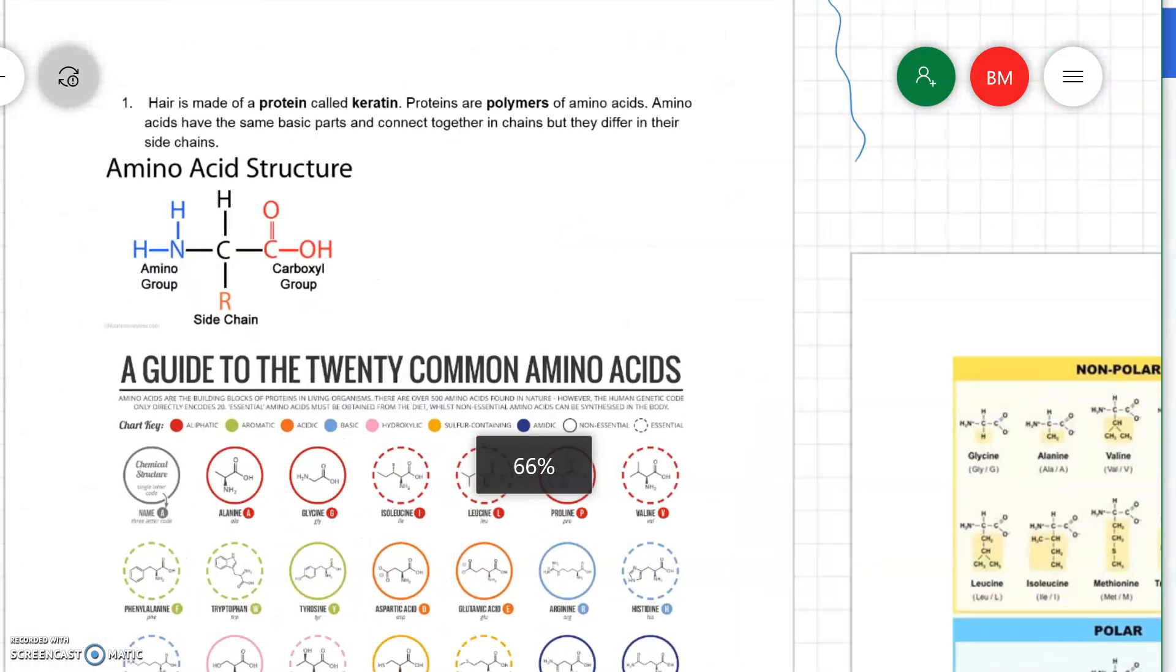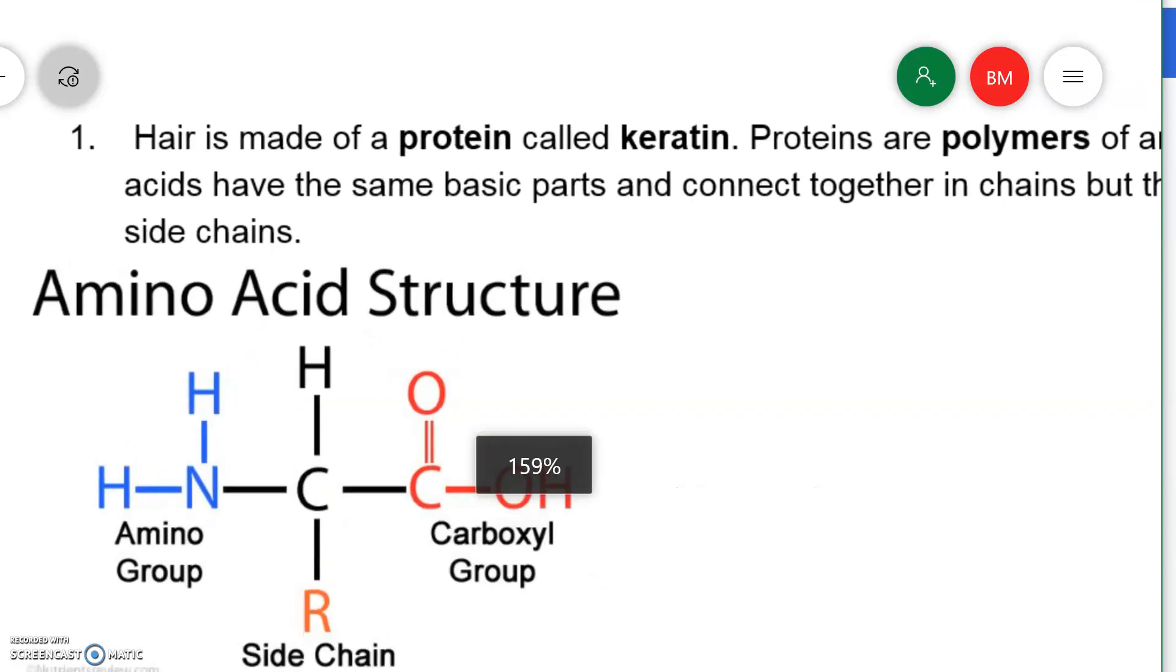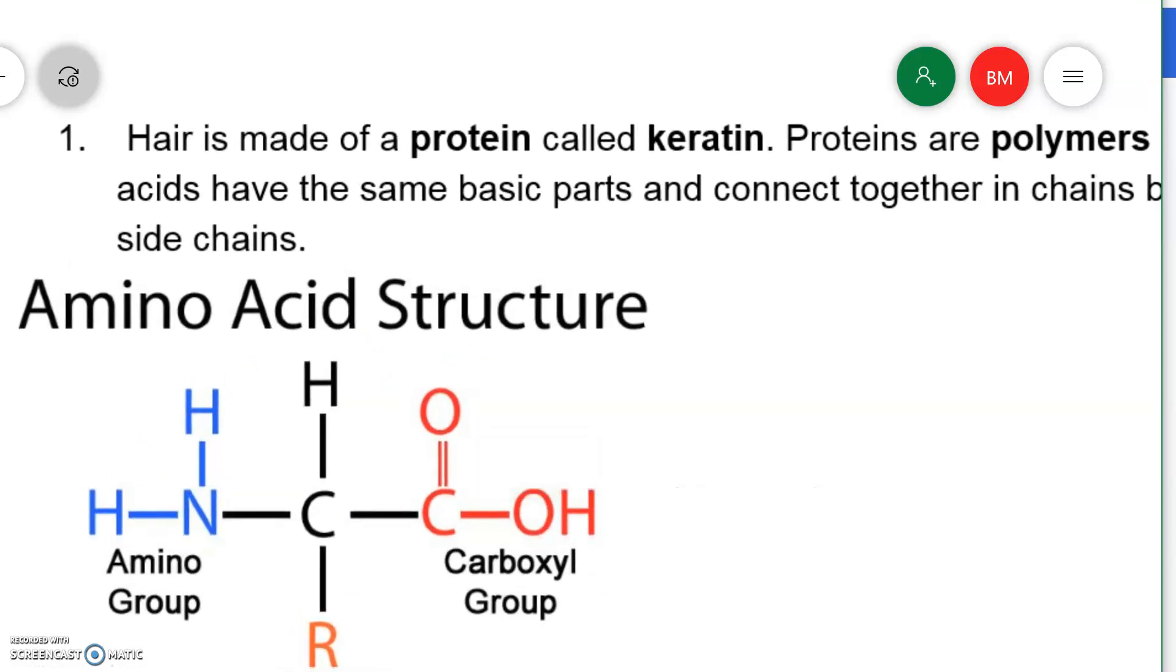So just to review, hair is made of proteins and proteins are made of amino acids. They're called amino acids because they have an amino group and a carboxyl group, which is an acid group. But all the amino acids differ in their side chain.